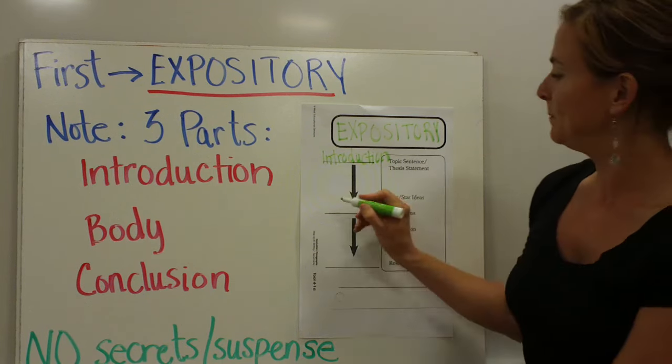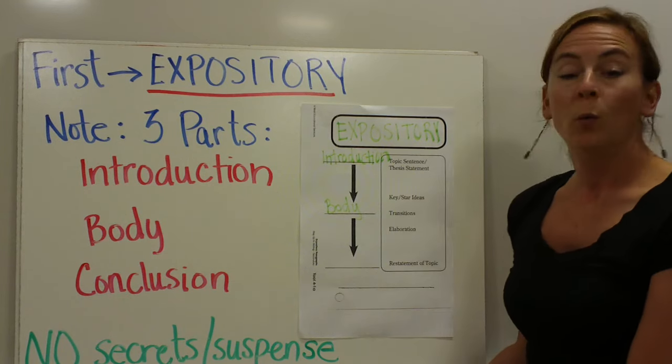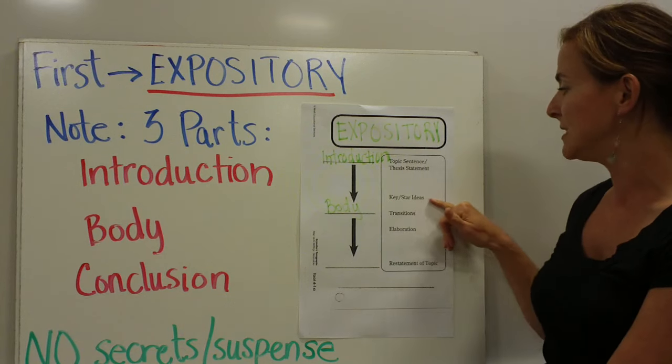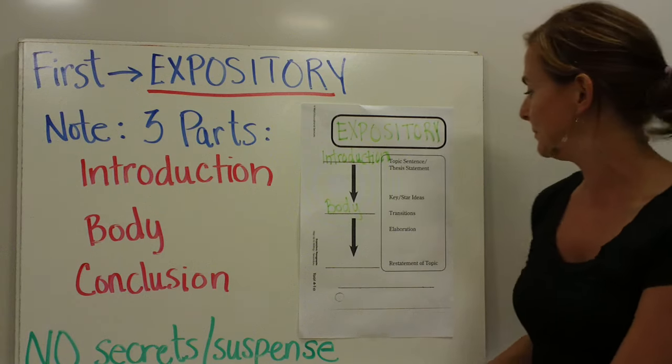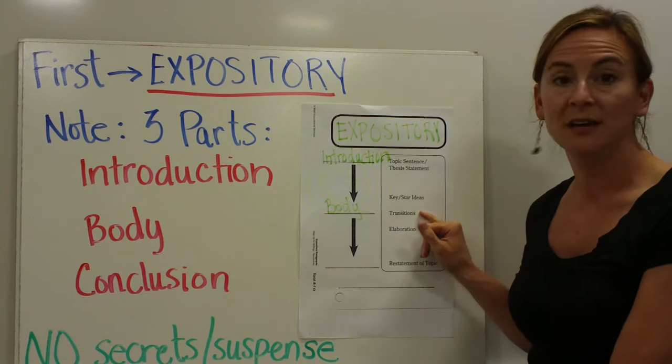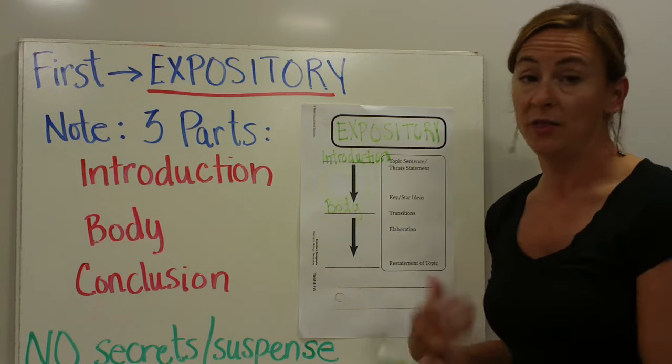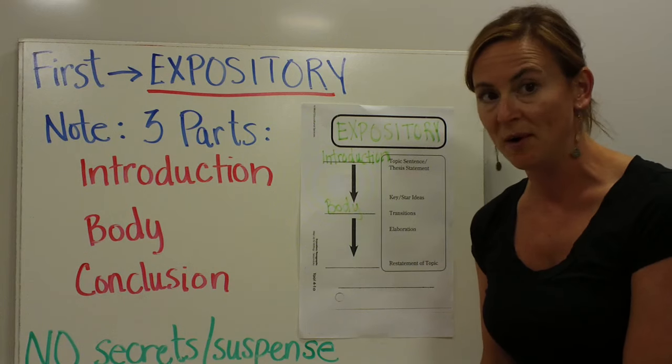Next comes the body. When you read the body of an expository piece, you are going to find the key or what we're going to call star ideas. You will also see transition words, and the author will elaborate or give you more information on the key ideas that they're writing about.